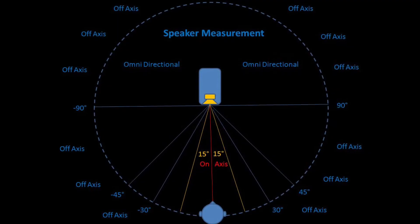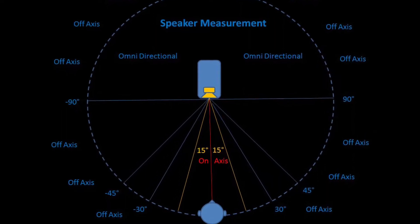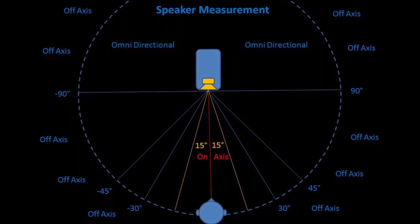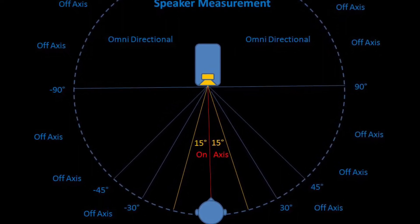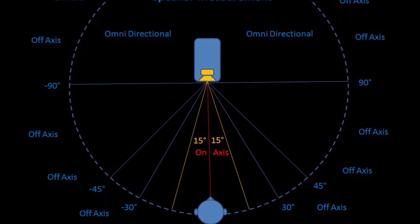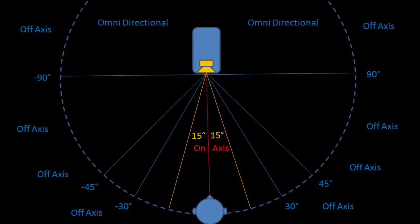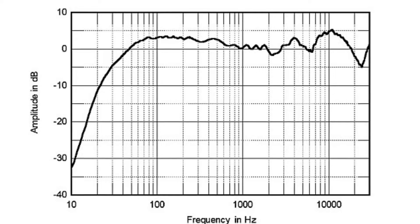First, the on-axis measurement is done at the tweeter level as we discussed in last episode. Here is showing it as the red line along with two yellow lines. Based on the MLS testing method, the on-axis measurement is done with multiple measurements from a 30 degree horizontal window and averages the results for the on-axis frequency response plot.